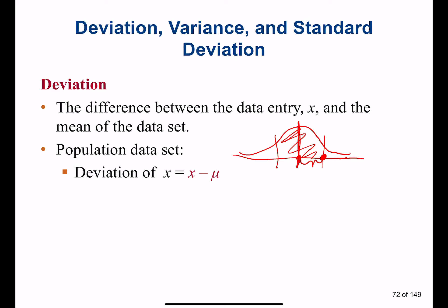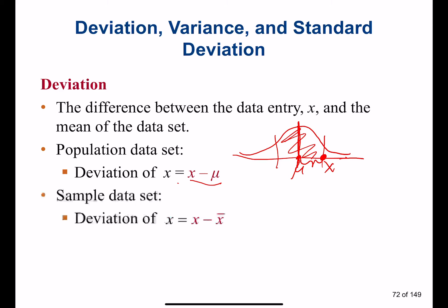For a population, deviation is x minus mu, where mu is the population mean. For a sample, deviation is x minus x-bar, where x-bar is the sample average. Remember: mu is the average for the population and x-bar is the average for the sample.